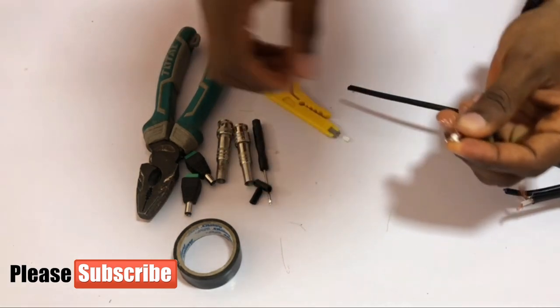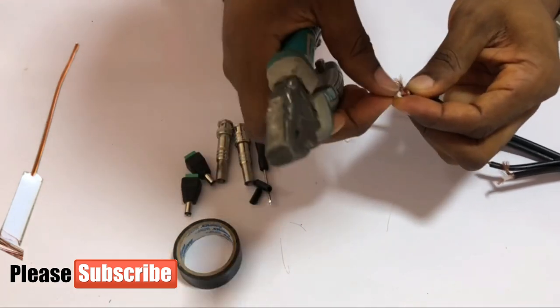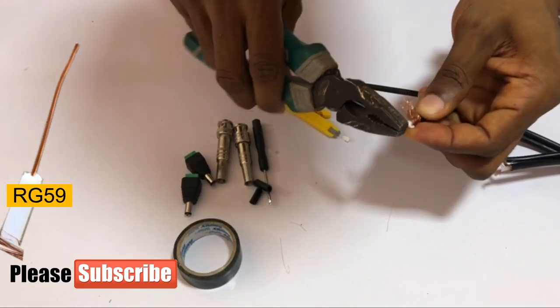Now if you see, this is RG59. It has just one strand, unlike the RG58.